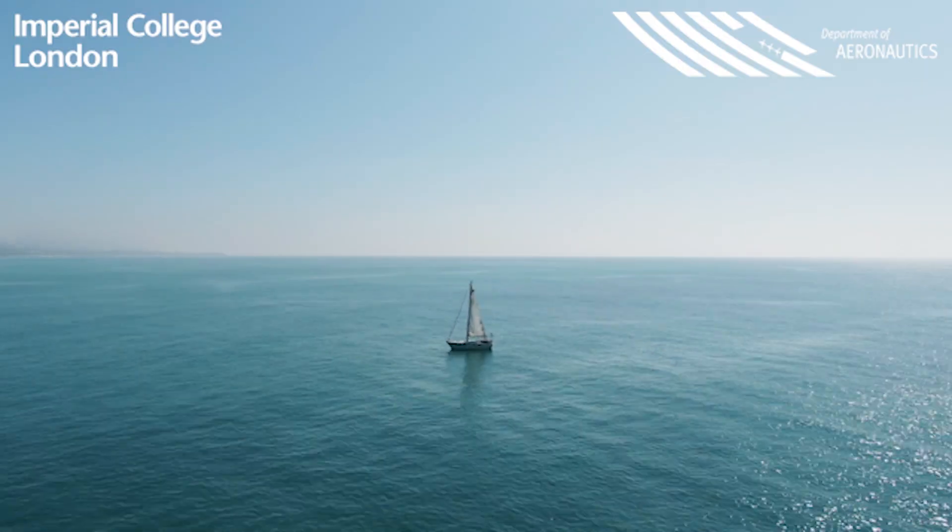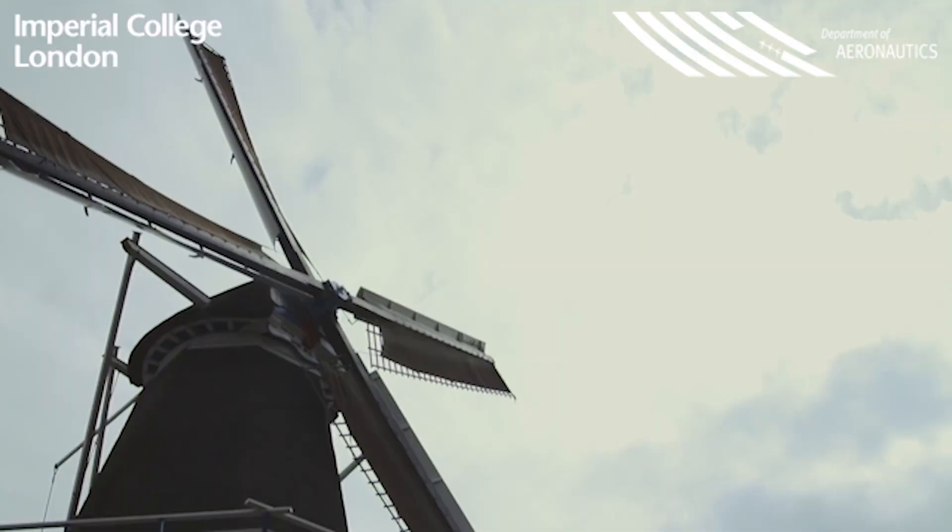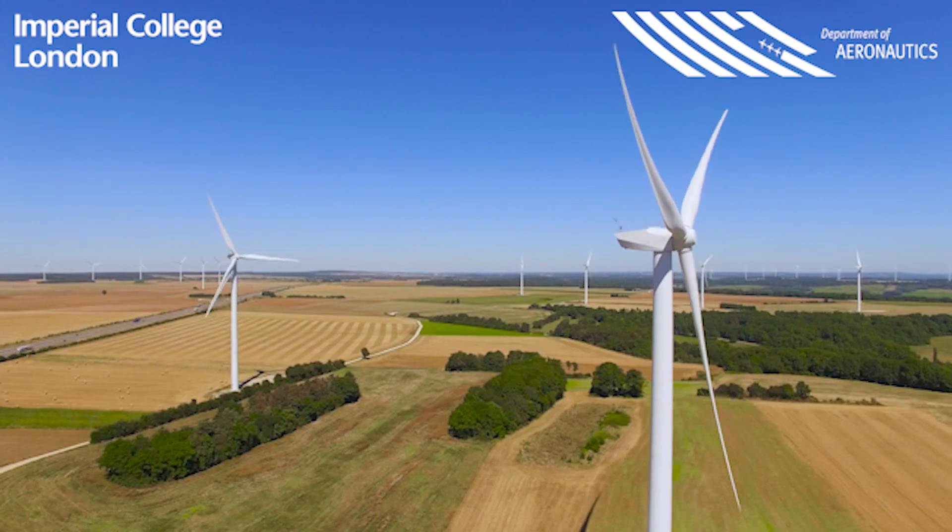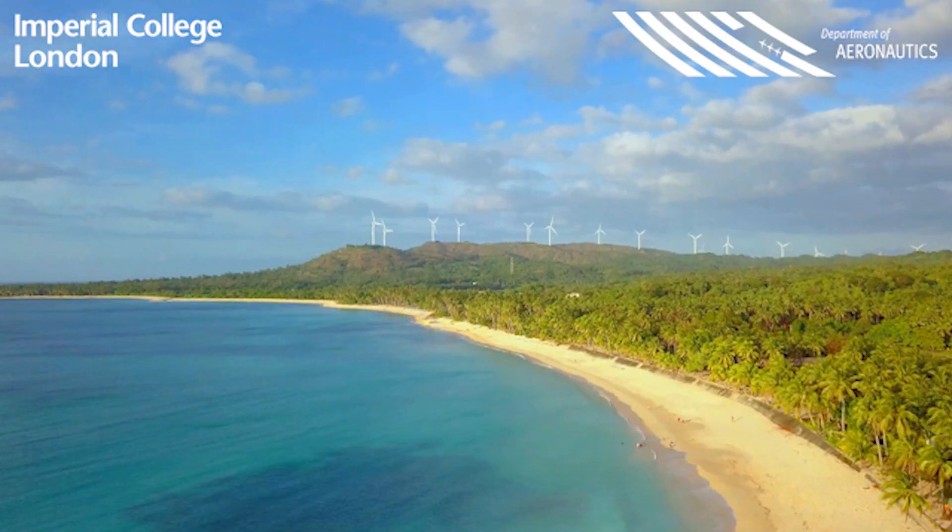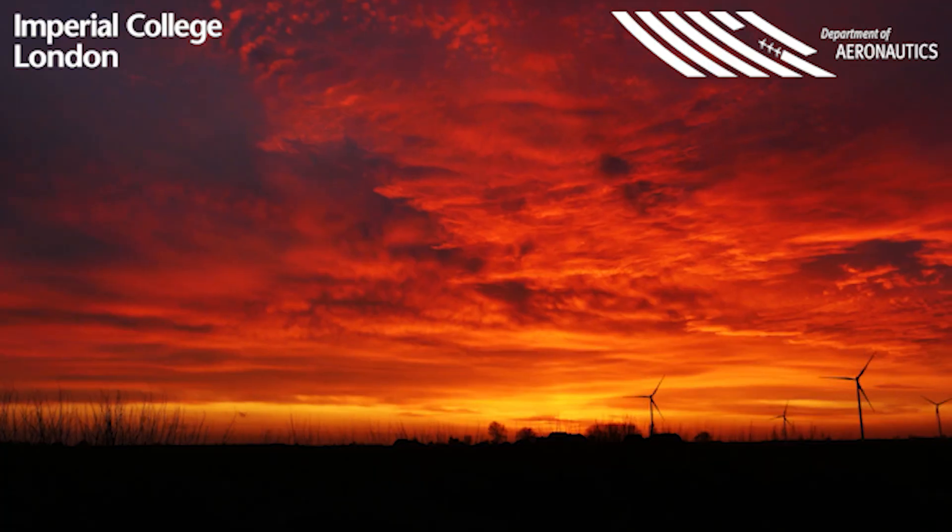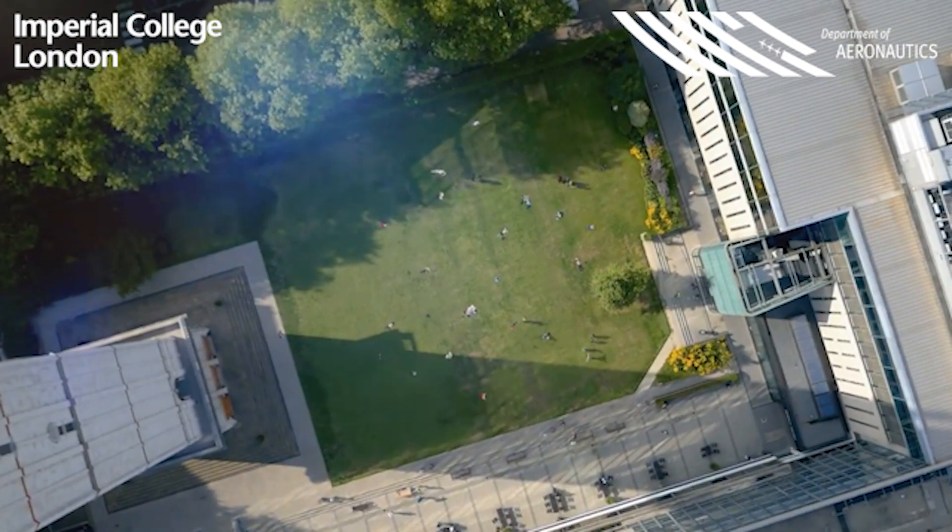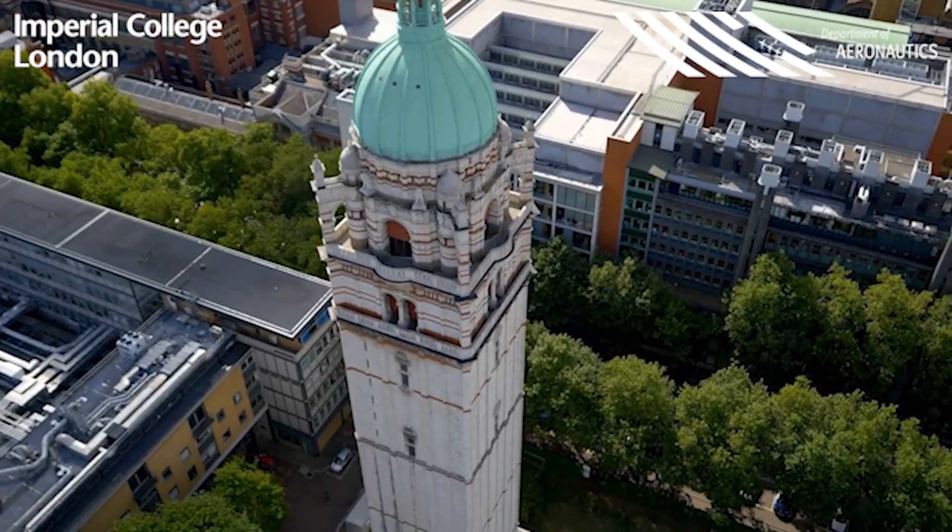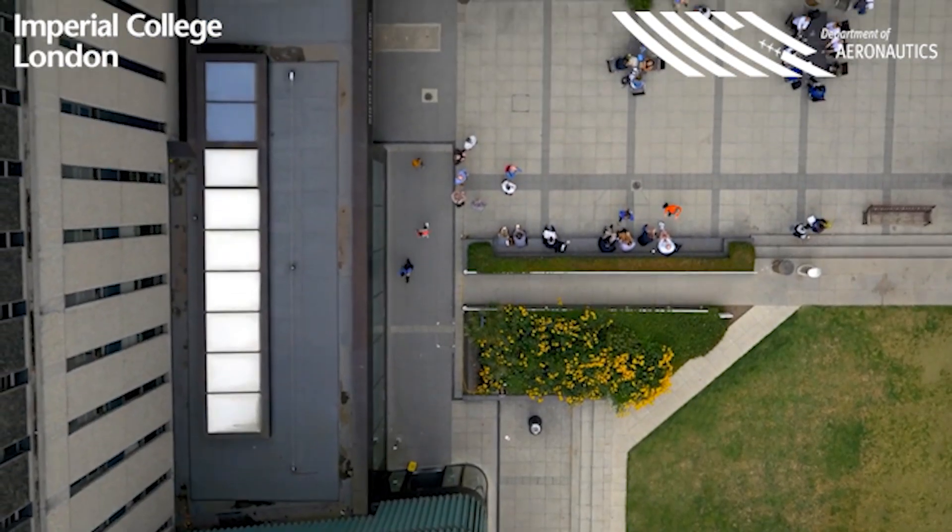We've harnessed wind for thousands of years for transport, for agriculture and now also for power. Wind turbines are used to convert kinetic energy from the wind into electricity. Engineers and scientists all around the world are working towards maximizing the efficiency of wind turbines. We are a group of six aeronautical engineering students at Imperial College London tasked with the challenge of designing a small wind turbine to be as efficient as possible.